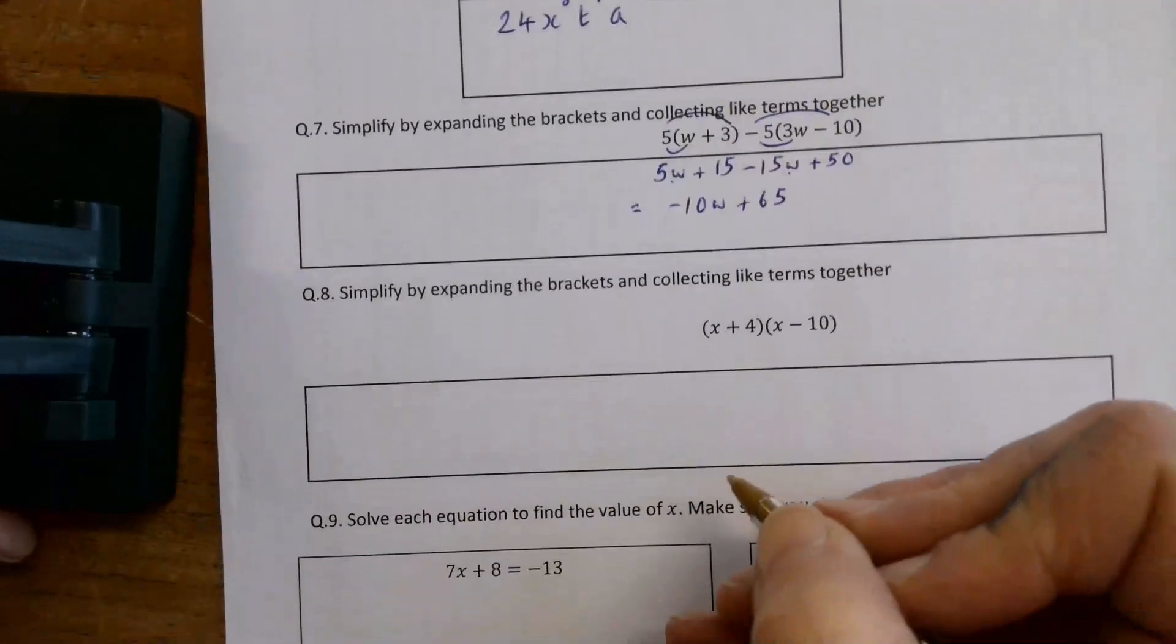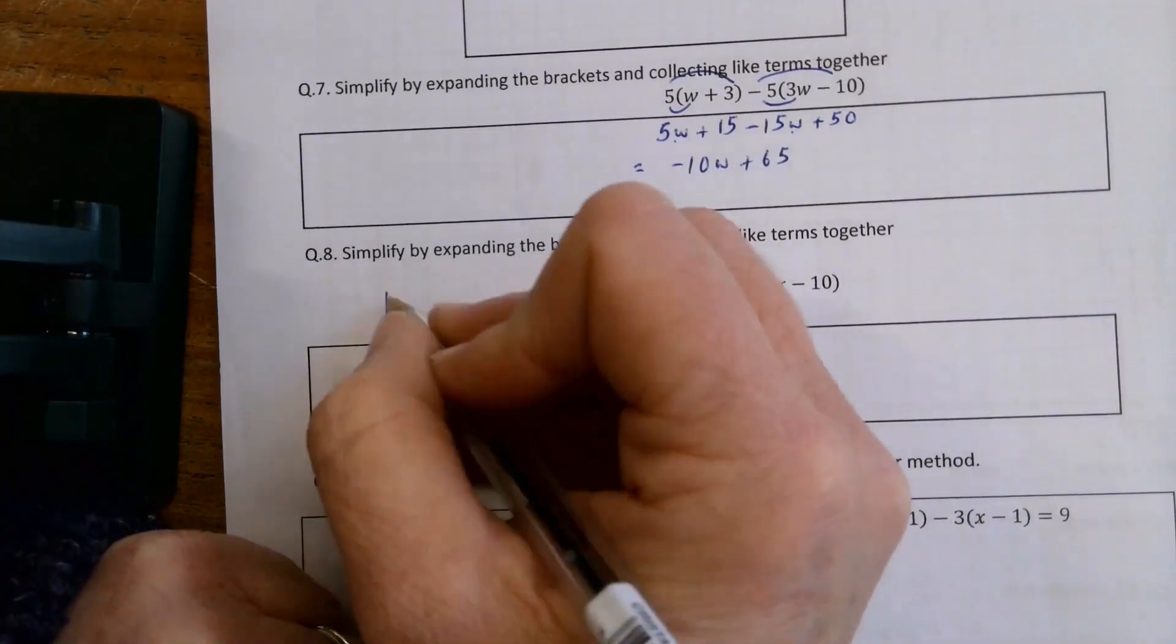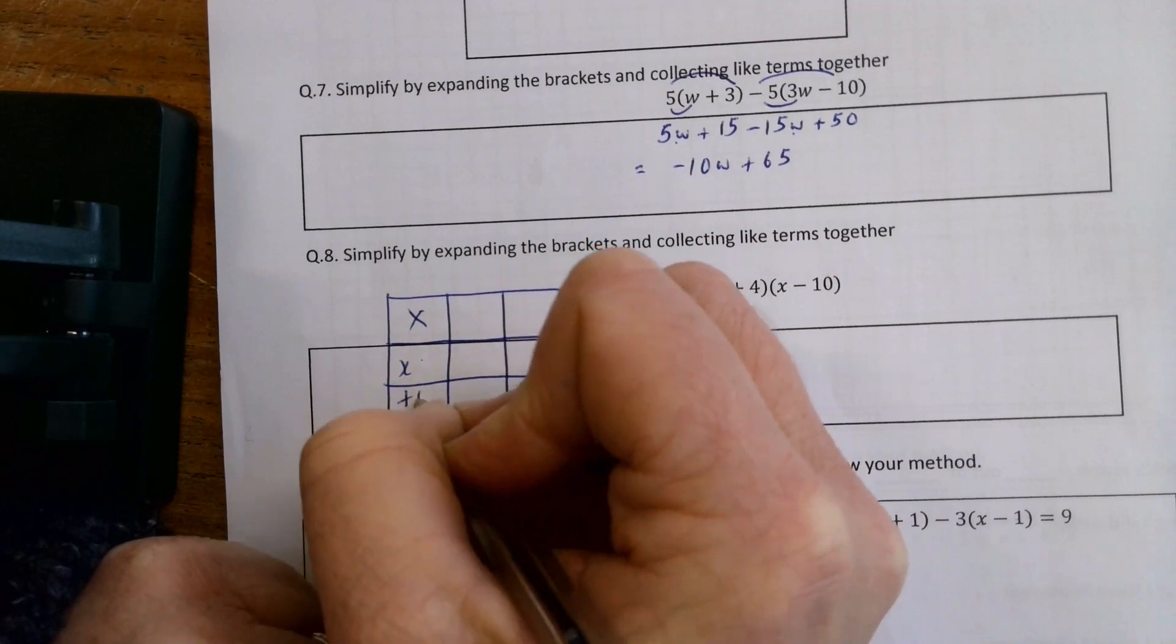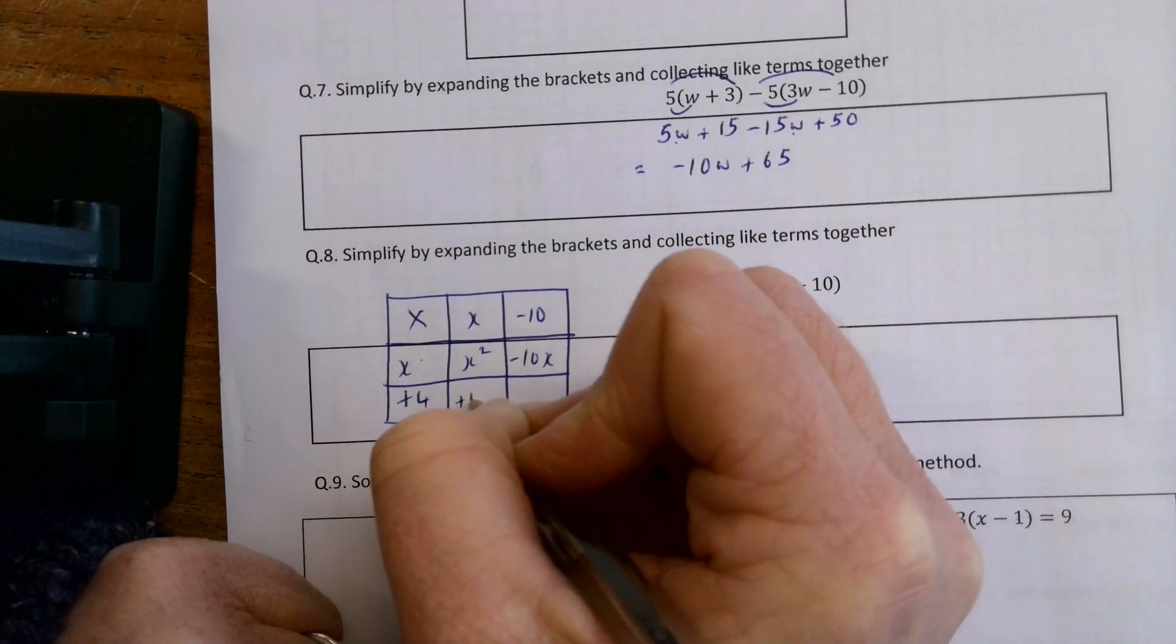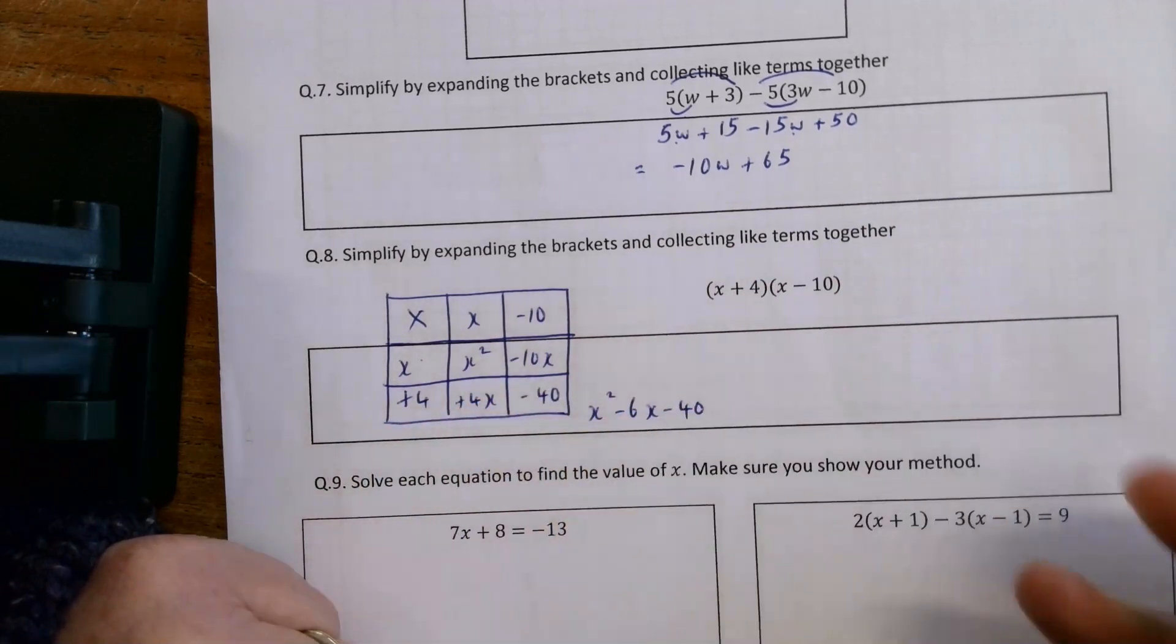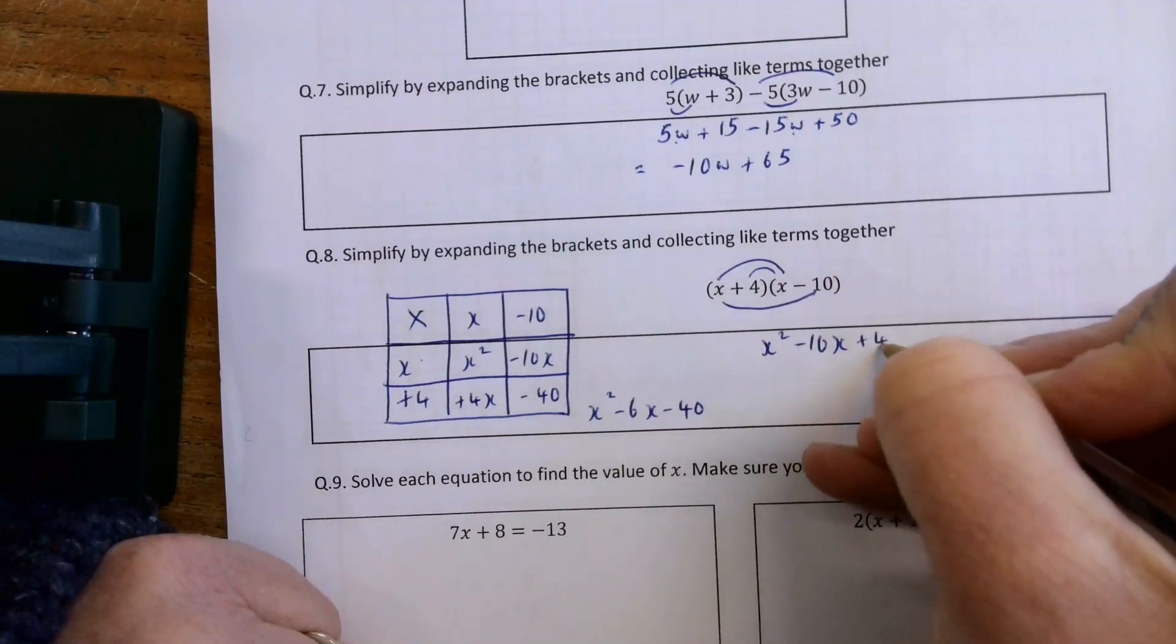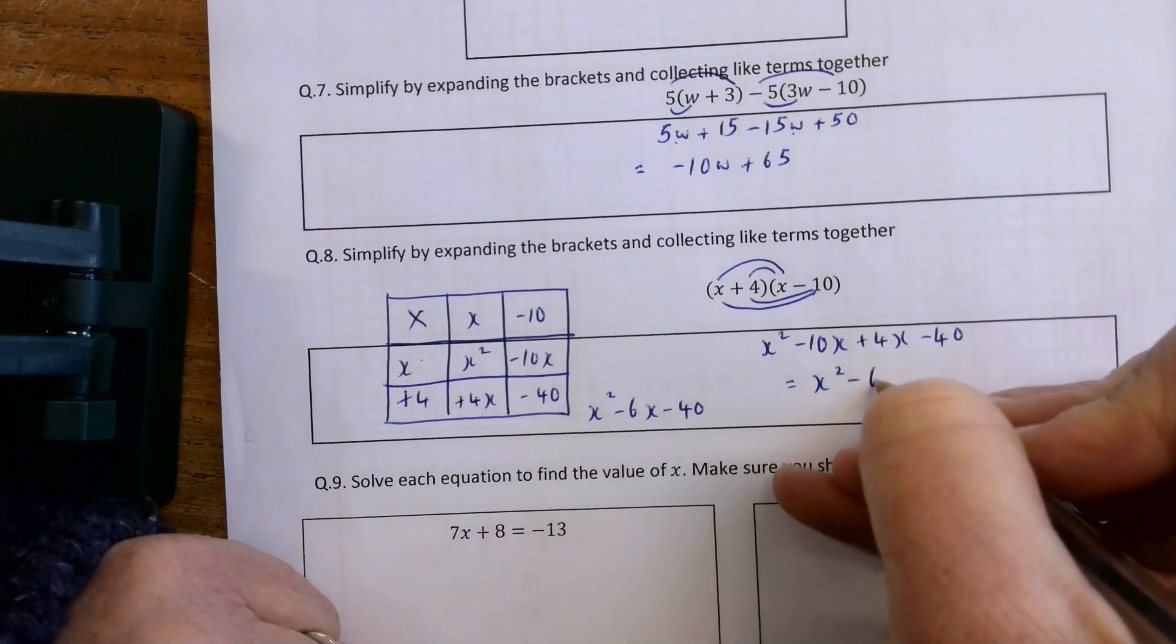Simplify by expanding the brackets and collecting like terms together. So I can either do an array. So I have x plus 4 by x minus 10. So x squared minus 10x plus 4x minus 40. So x squared minus 6x minus 40. Or I can just do x by x is x squared, x by minus 10 is minus 10x. Plus 4 by x is plus 4x. And plus 4 by minus 10 is minus 40. So x squared minus 6x minus 40.